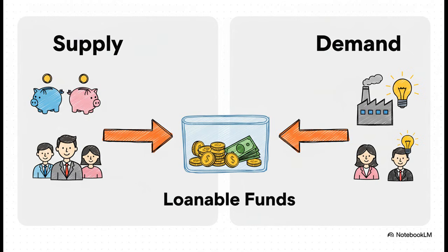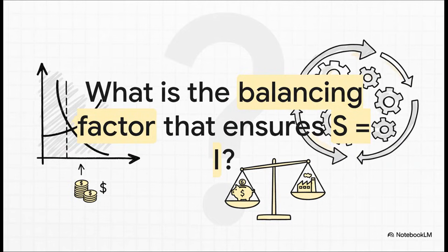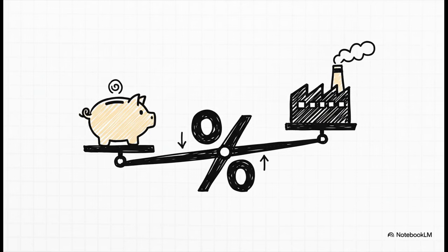On one side, you've got savings, which is the supply of money that's available to be lent out. And on the other side, you've got investment, which is the demand from businesses that want to borrow that money. Just like in the market for apples or cars, there has to be a price that goes up or down to make sure supply meets demand. The price in this market for money is the interest rate, which we'll call R. The interest rate is literally the price of borrowing — it's the magic dial that turns up or down to ensure that the amount of money people and the government want to save perfectly matches the amount of money that businesses want to borrow and invest.